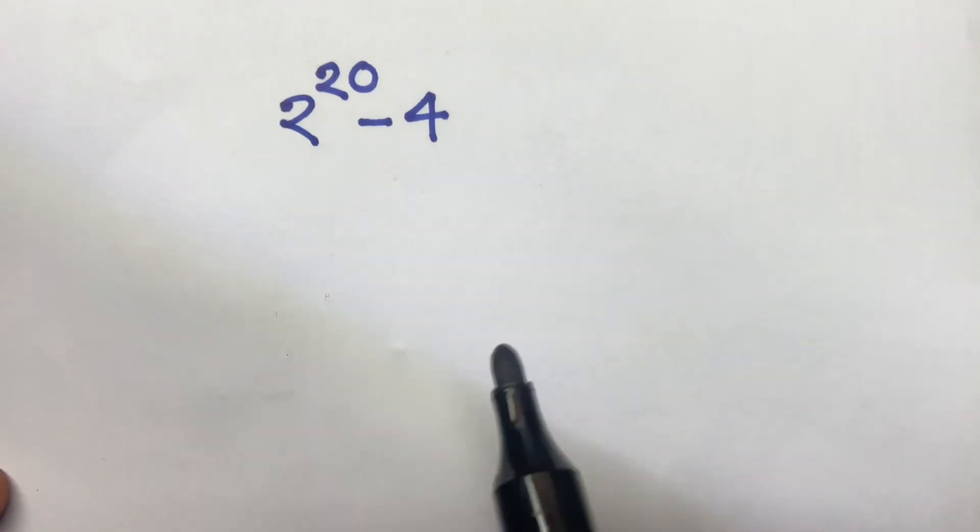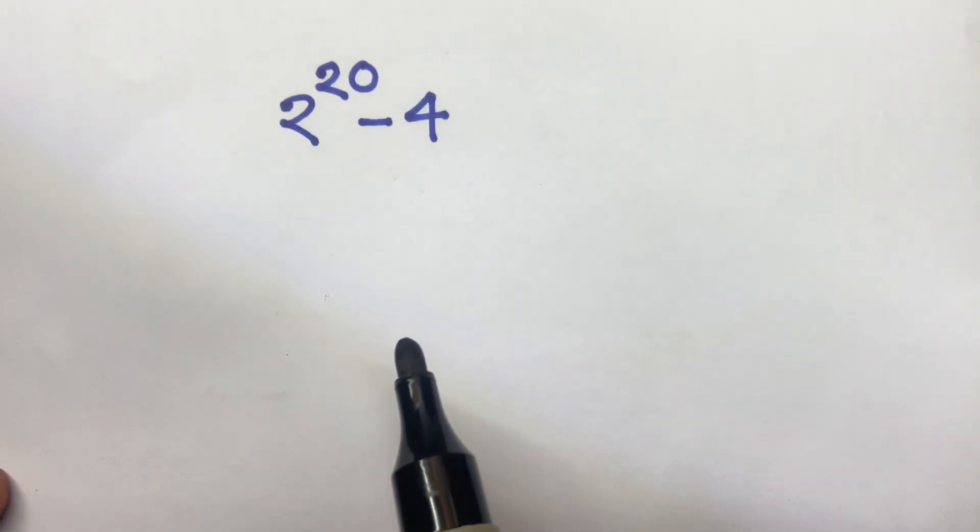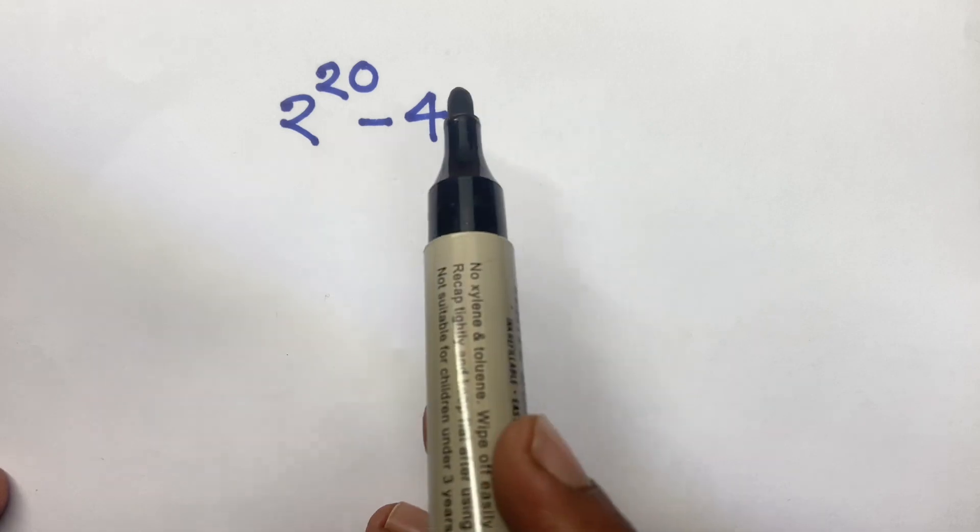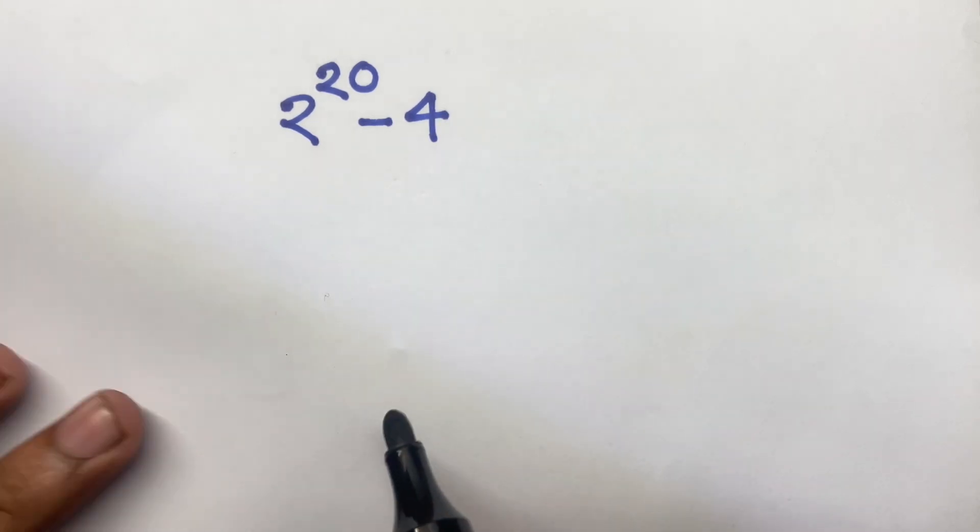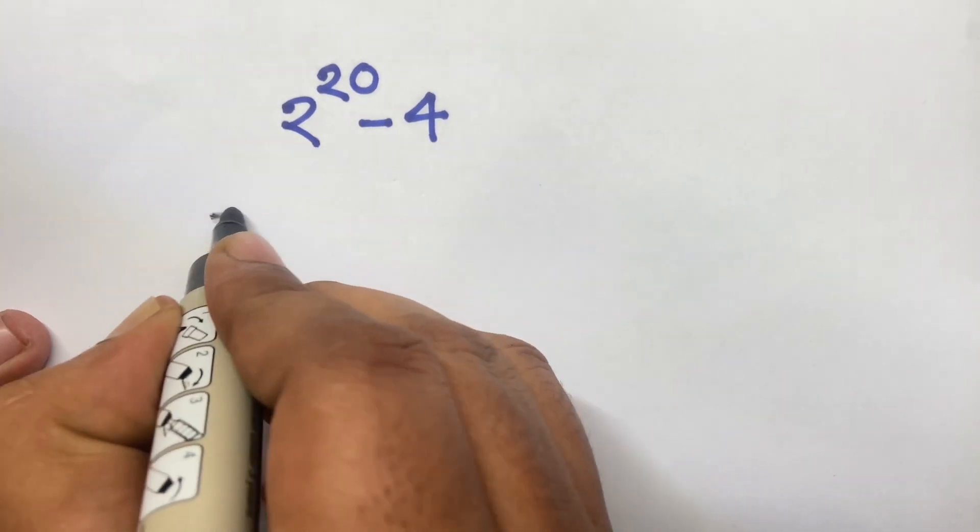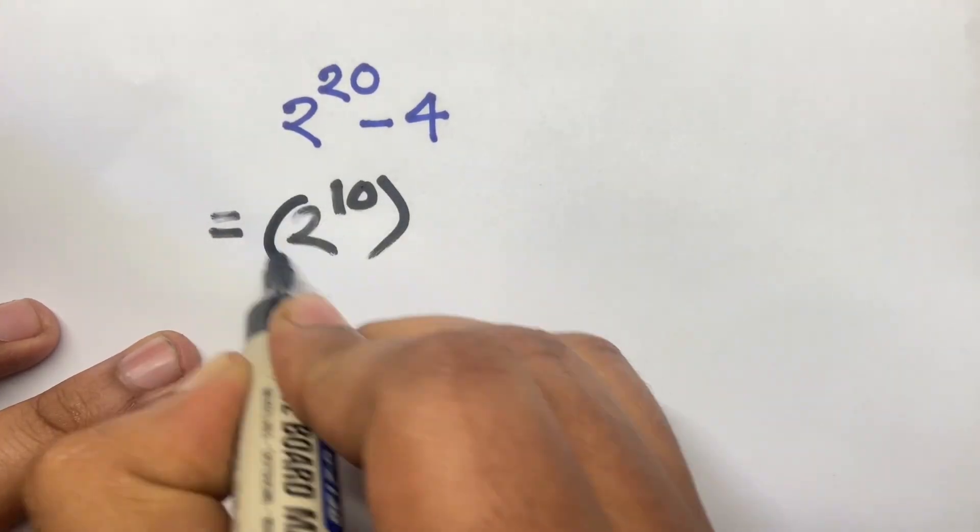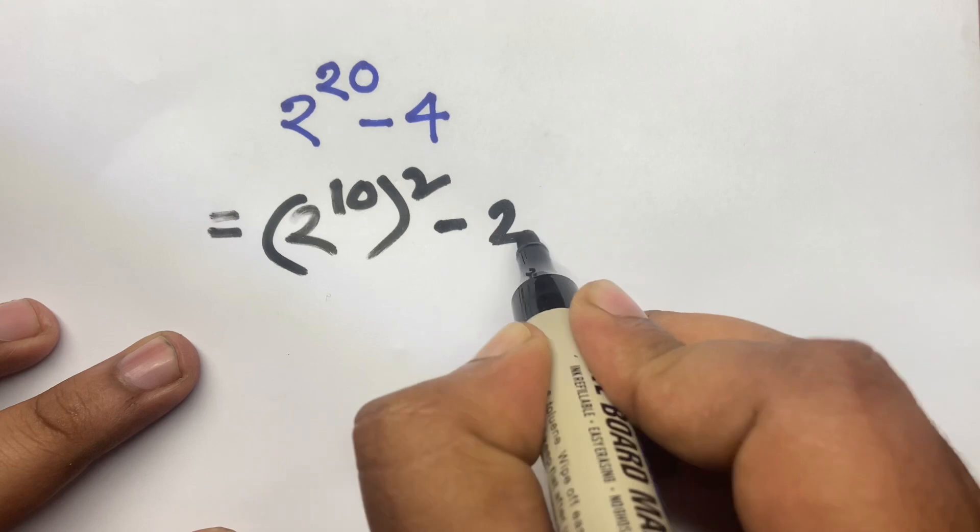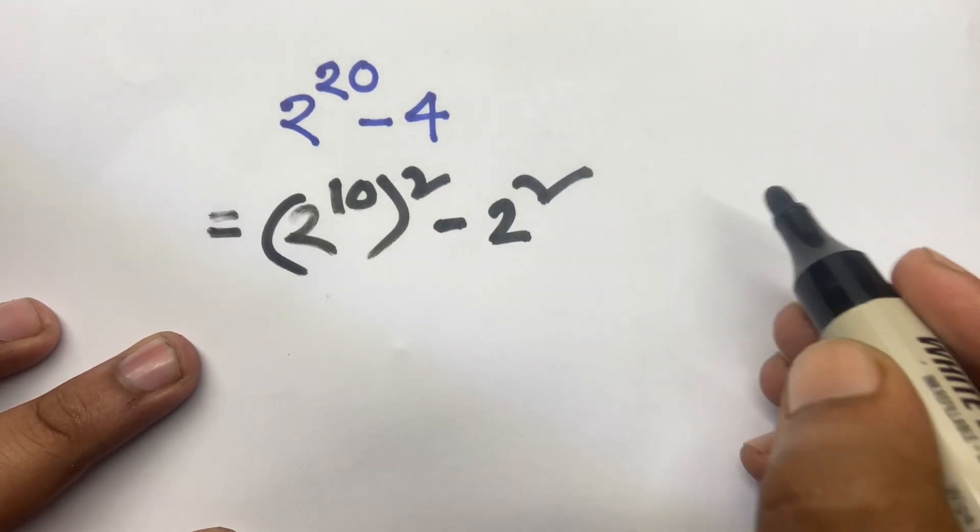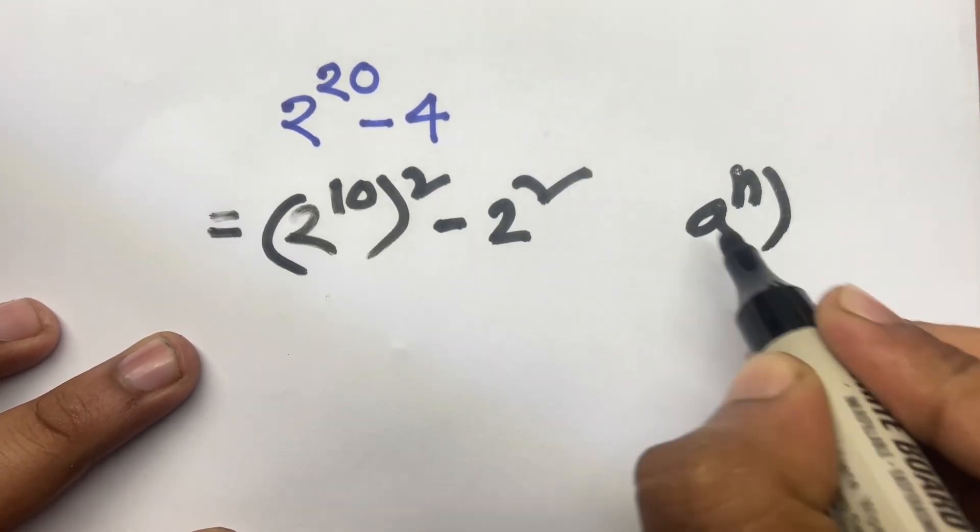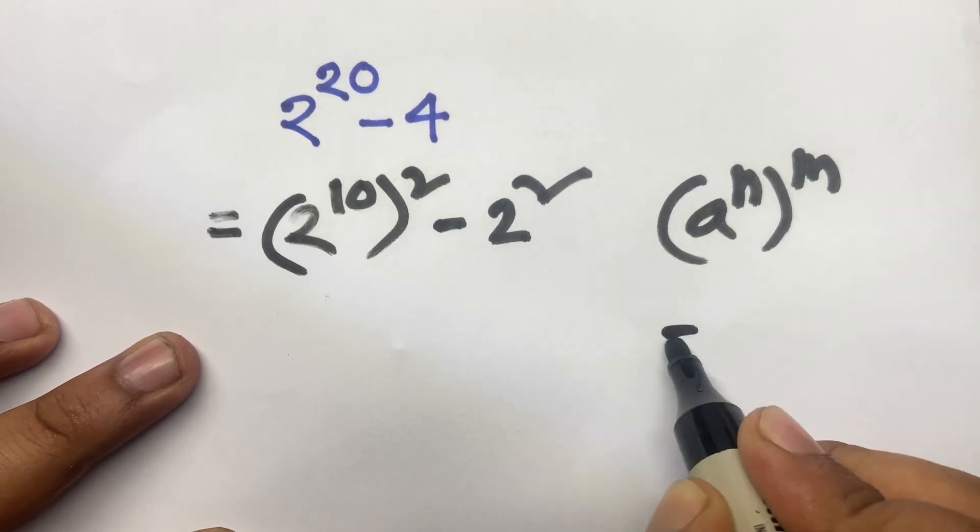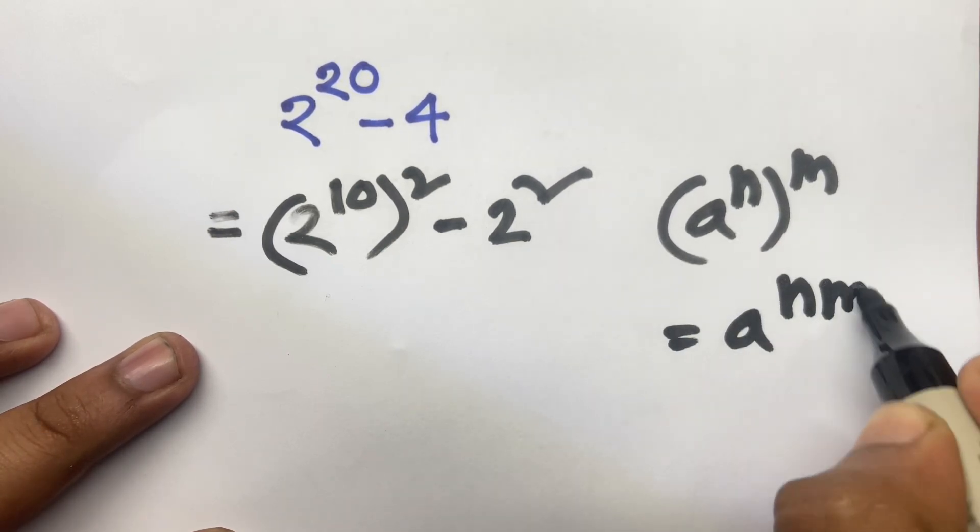Hello everyone, in this video I solve this math question: 2 to the power 20 minus 4. So let's start. First of all, I can say 2 to the power 10 whole squared minus 2 squared. We know that exponential rules: a to the power n power m equal to a to the power nm. I follow this formula in this line.